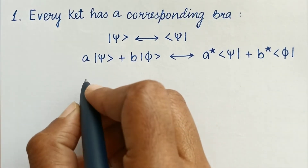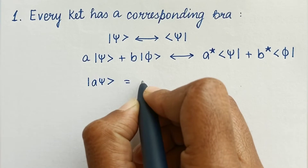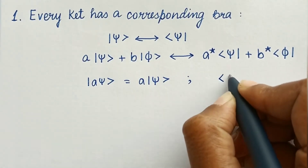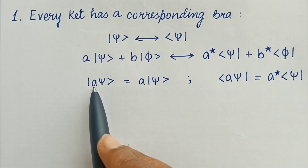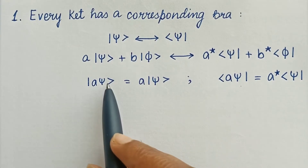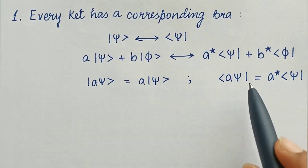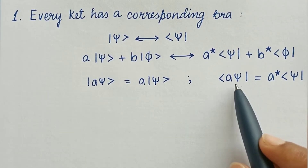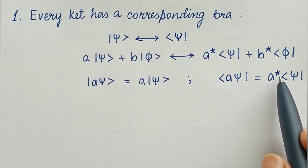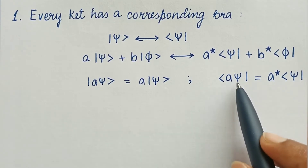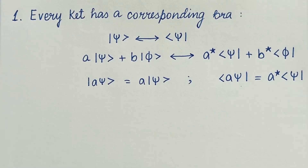One more common notation: A|ψ⟩ written in bra form equals A*⟨ψ|. When we write the complex number together with the state vector in bra form and take the complex number out, it gets converted into its conjugate. So A|ψ⟩ in bra vector form equals A*⟨ψ|. This was the first property.